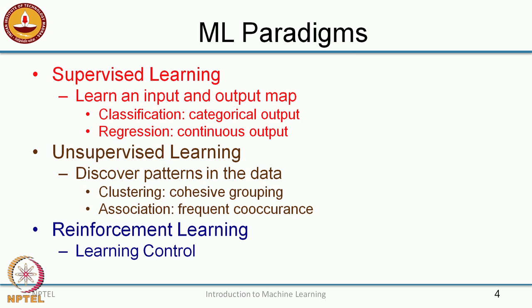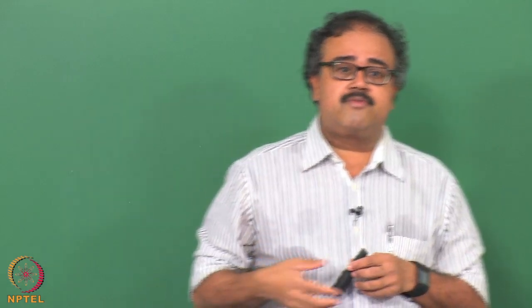There are many variants of supervised and unsupervised learning, but those are the main ones covered here. The third form is reinforcement learning — neither supervised nor unsupervised — where you learn to control the behavior of a system. I will give more intuition into reinforcement learning in a later module.